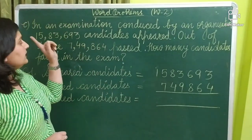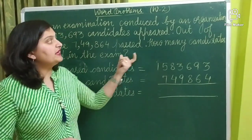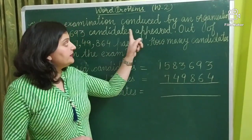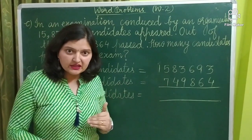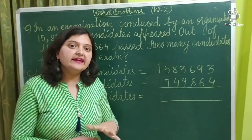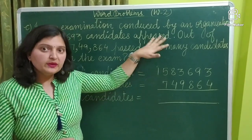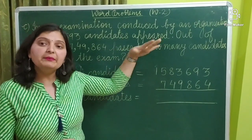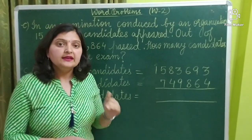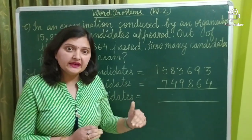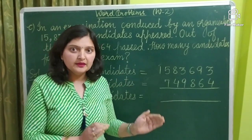So, first of all, an examination is held in which some candidates appear. Candidate means those who are giving the exam — if you are giving the exam, you are also a candidate. Appear means those candidates who are sitting in the exam hall. Whether they passed or failed is decided after that, but appear means they went to the examination hall and sat there.